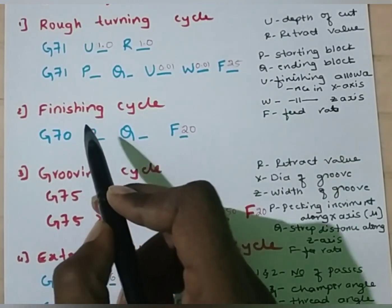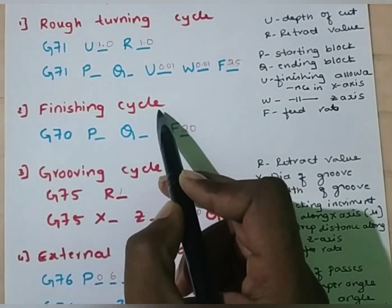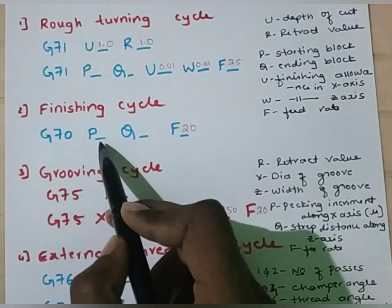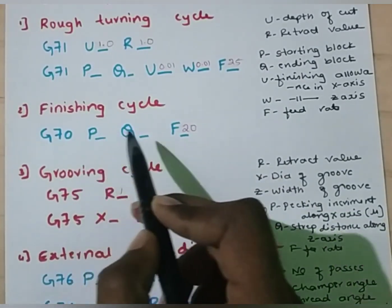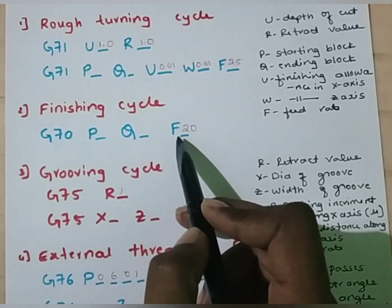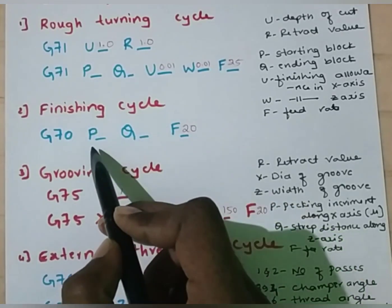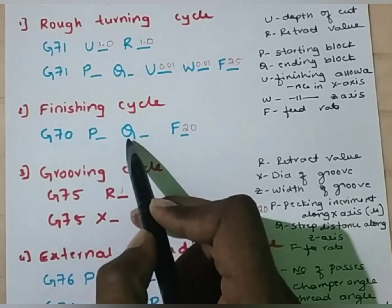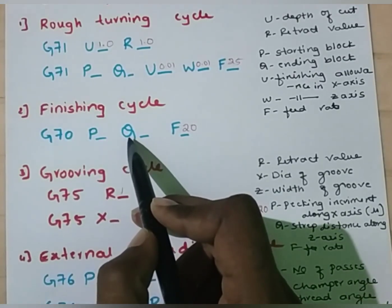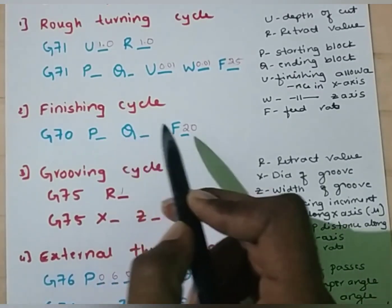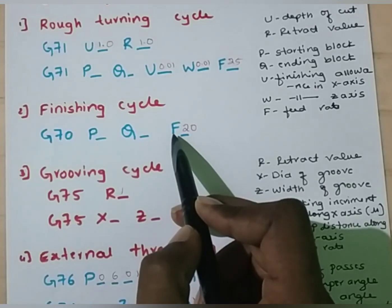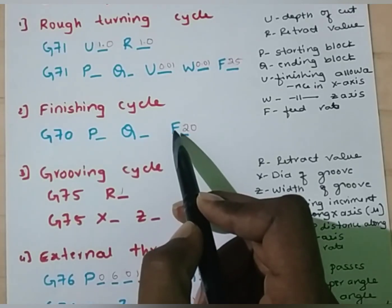Next, the syntax for finishing cycle is G70, P-value, Q-value, and F-value, where P-value is starting block, Q-value is ending block in a program, and F is feed rate — I am going to assume it as 20 mm per revolution.